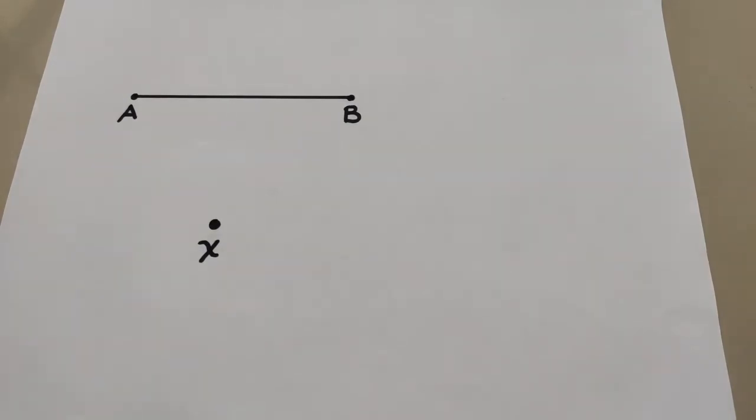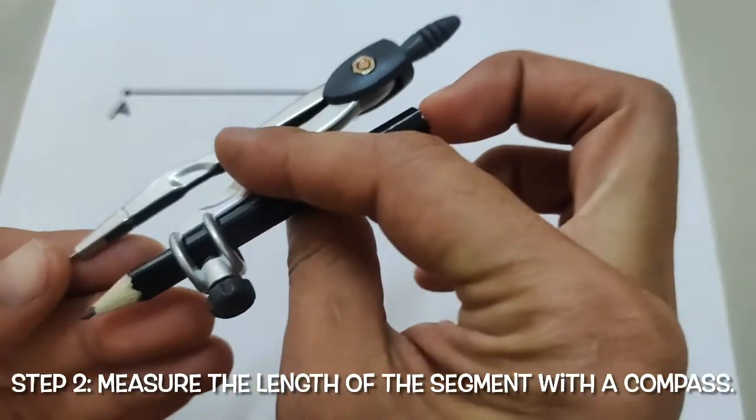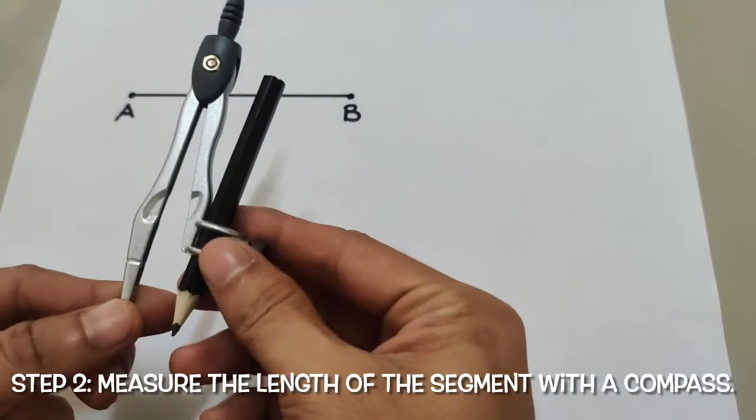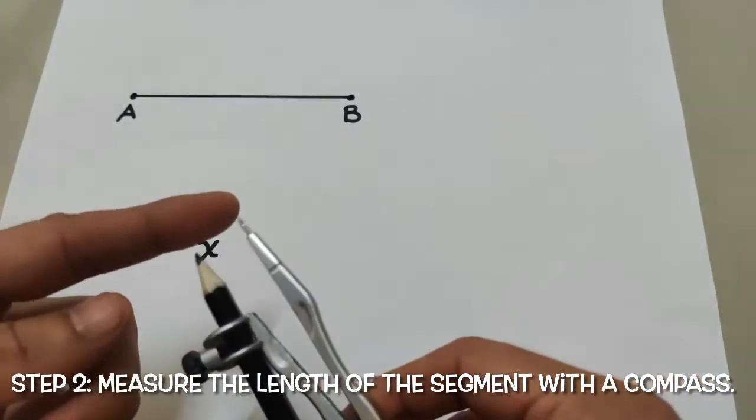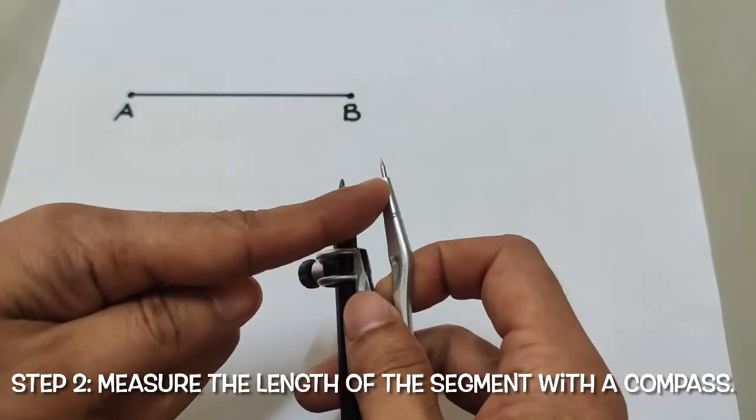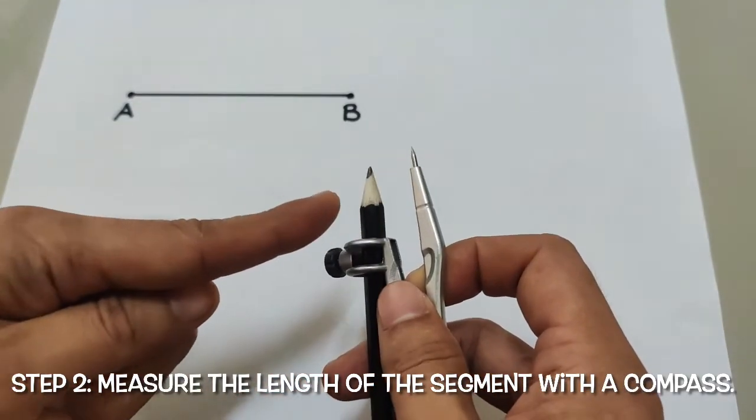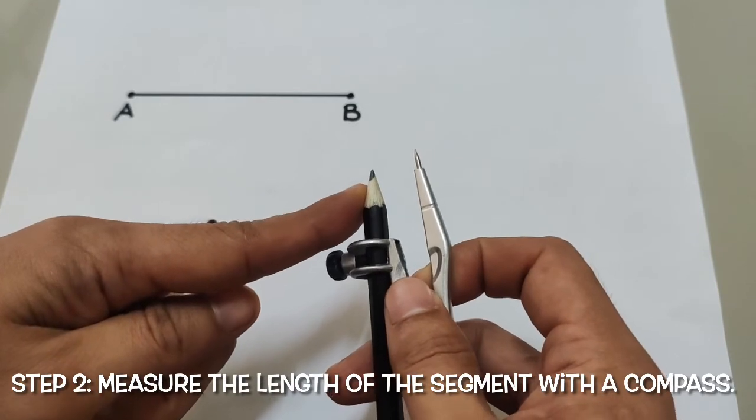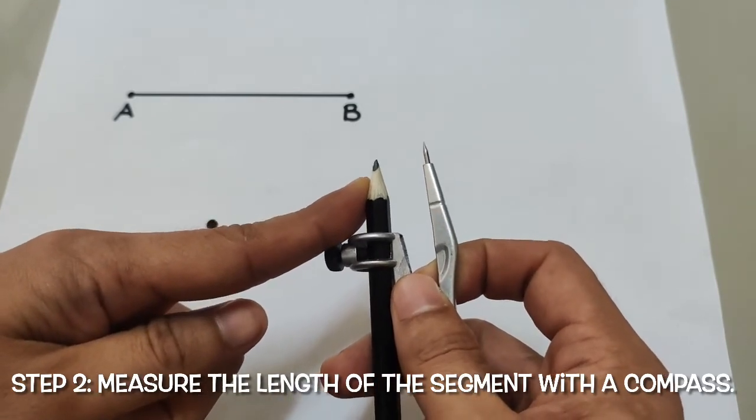To create a segment congruent to the measure of AB without using a ruler, we will measure the length using the compass. The compass has two parts: first is the pointer, and the other one is the lead or the pencil.